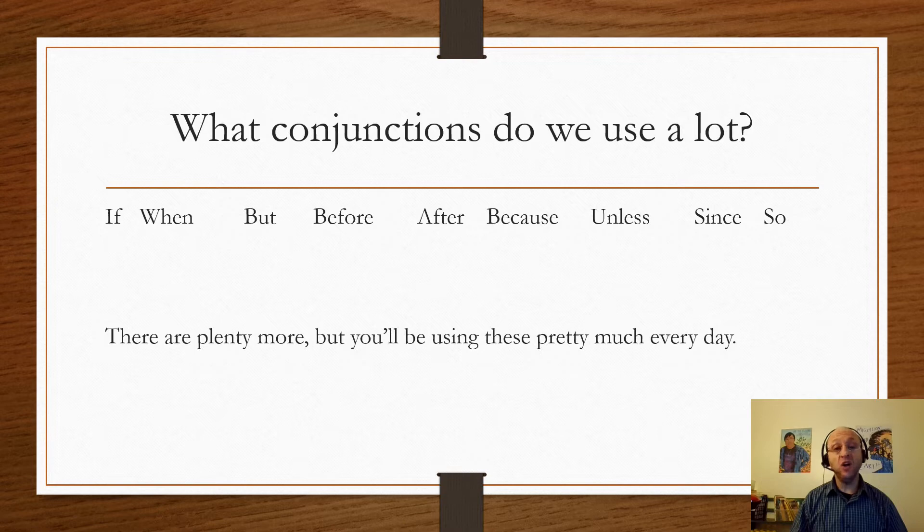'Unless'—I can't go out to play unless I finish my homework first. 'Since'—since I haven't finished my homework I can't go out to play. 'So'—I did my homework so now I can go out to play.